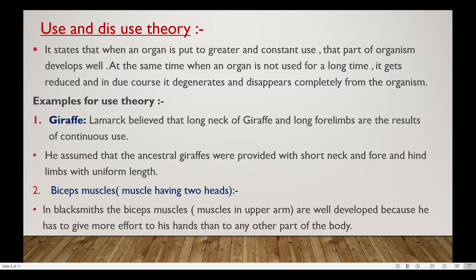Another example is the blacksmith. The biceps muscles have two heads. In a blacksmith, the muscles of the upper arm are well developed because he has to exert more effort with his hands than any other part of the body. The biceps muscles and upper arm muscles are well developed.